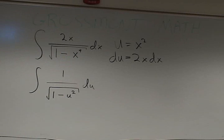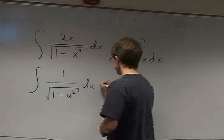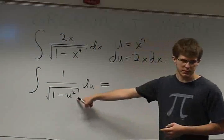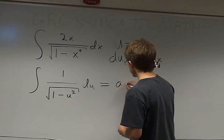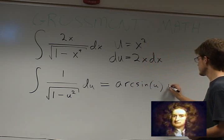All we have to do is realize that 1 over the square root of 1 minus u squared is the derivative of arc sine. So it's the arc sine of u plus c.